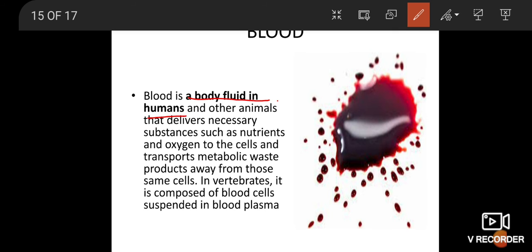Formed elements of blood. Blood corpuscles are of three types: red blood corpuscles (RBC), white blood corpuscles (WBC), and blood platelets (thrombocytes). Red blood corpuscles, also called erythrocytes, are RBC cells.